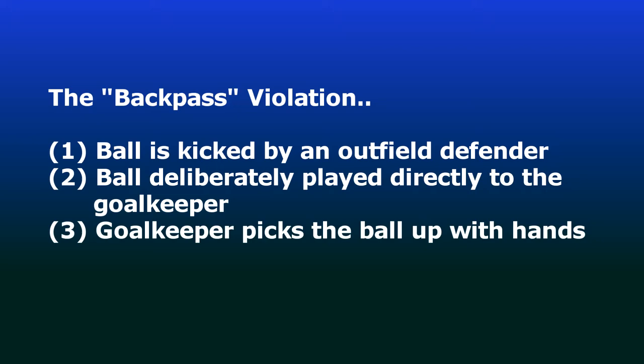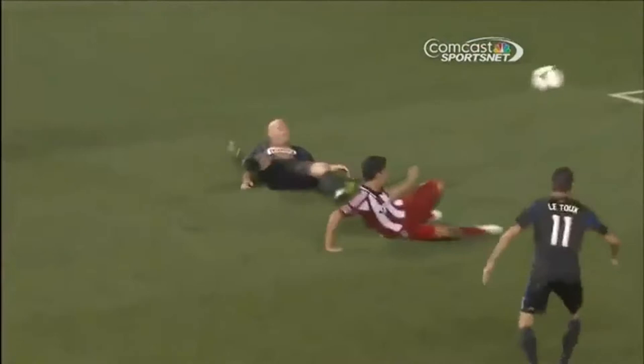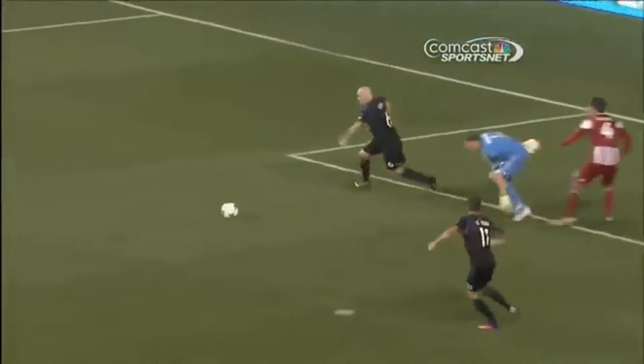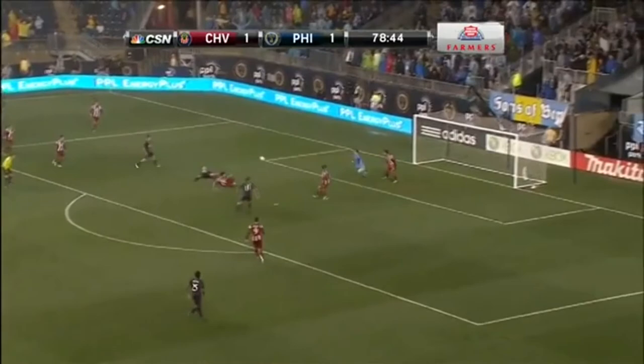If any of these three things are not present, then no violation can occur. The ball was clearly kicked by defender Josue Soto; the ball did not touch any other players en route back to Kennedy, who picked it up with his hands — two out of two. But was the ball played deliberately by Soto to Kennedy? That's a reach. In the backpass call, if you're going to call it, you should have absolutely no doubt the ball was played to the goalkeeper on purpose. My guess is that nine out of ten people who watch this would say there's plenty of doubt. PRO even commented on this in their Play of the Week, stating that in their opinion this was not a deliberate pass and therefore should not have resulted in a call.